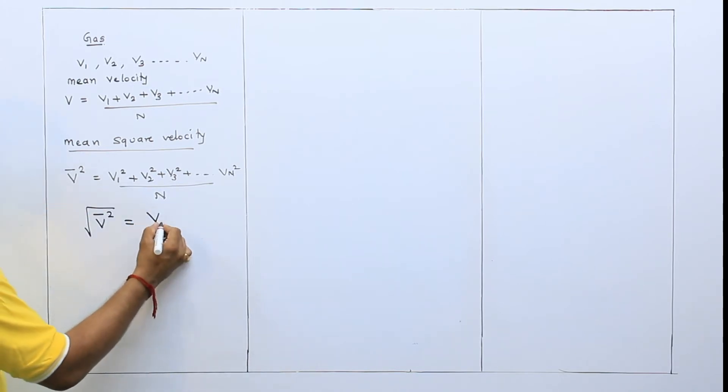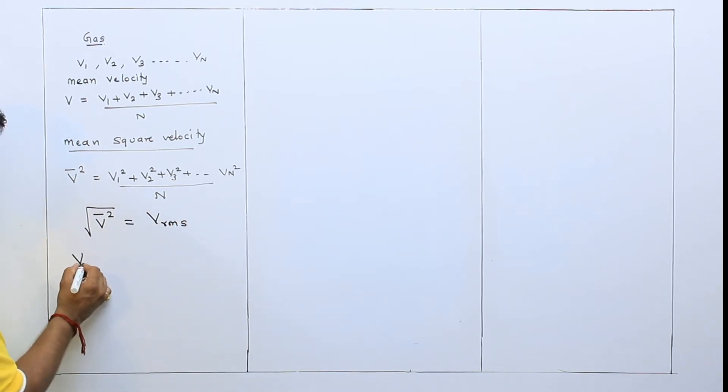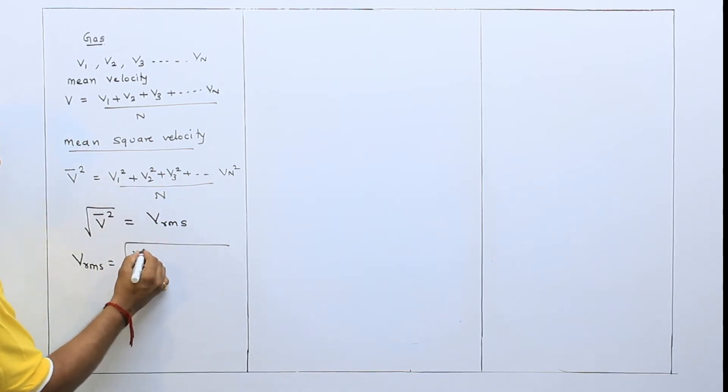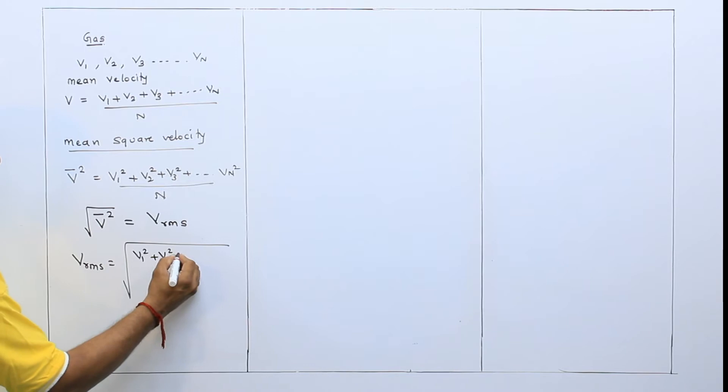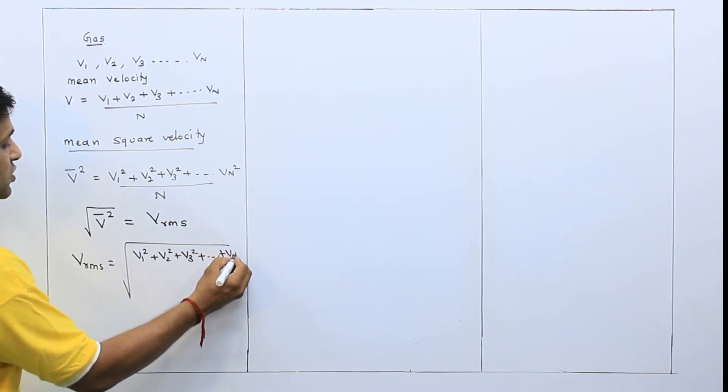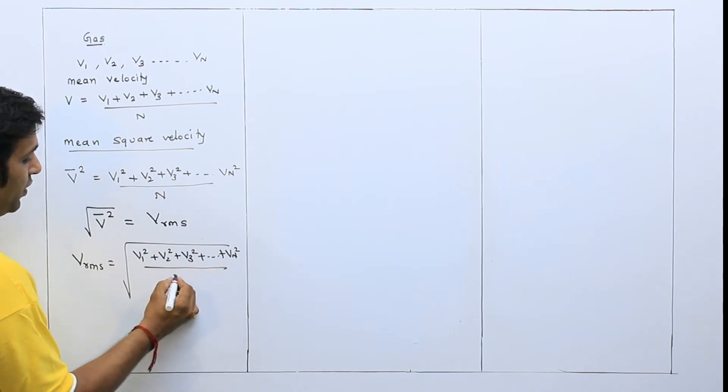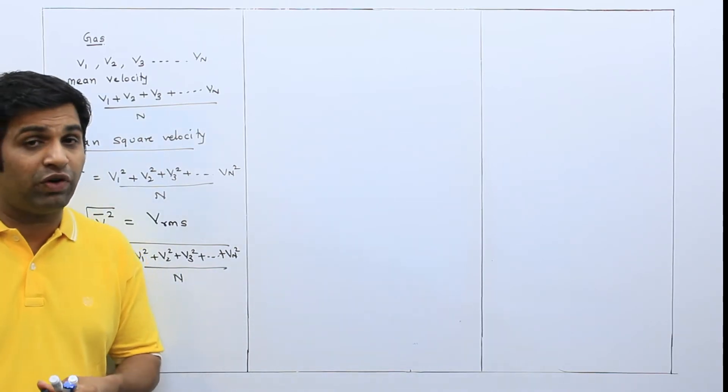Root of v bar square. We call this RMS velocity. So root mean square velocity, RMS velocity, it is nothing but root of this value. That is v1 square plus v2 square plus v3 square plus dot dot dot plus vn square upon n. So this will be RMS velocity.